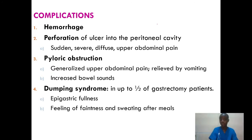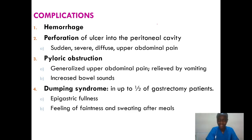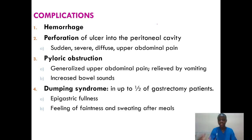What are the possible complications? One, we talk about hemorrhage and perforation of the ulcer. If perforation occurs in the peritoneal cavity, the patient may have severe diffuse abdominal pain. Then we might have pyloric obstruction. Then dumping syndrome might occur, where patients present with epigastric fullness, feeling of faintness, and sweating mainly after meals — that is dumping syndrome.